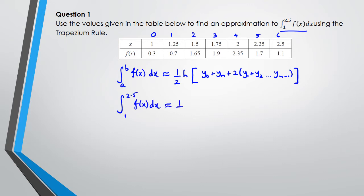So we can say that the approximation of the integral from 1 to 2.5 of f(x) dx is approximately half times h. Now h is how much these things are increasing by, and we can see that it's increasing by 0.25, multiplied by y₀. y₀ is the first term, so we got 0.3. yₙ is the last term, so plus 1.1.